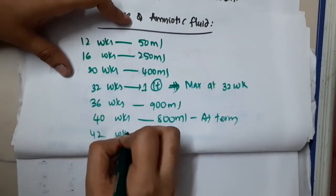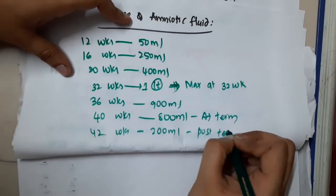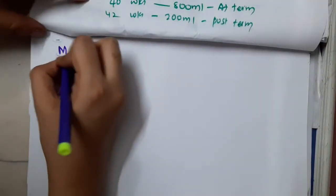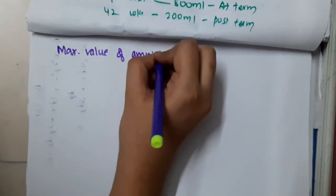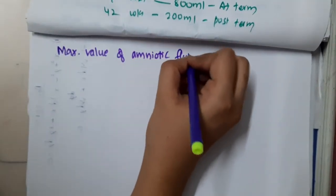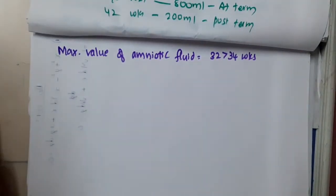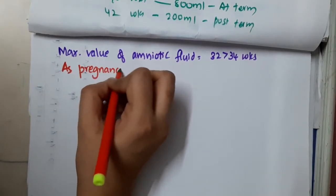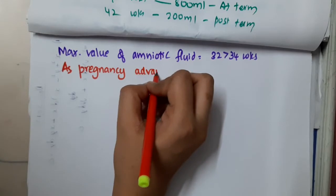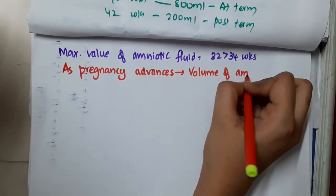At 42 weeks of gestation it is 200 ml, that is post term. The maximum value of amniotic fluid is around 32 to 34 weeks. As the pregnancy advances, the volume of amniotic fluid will decrease.